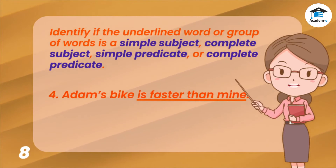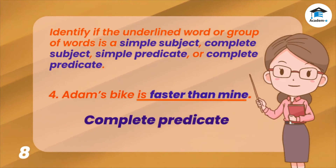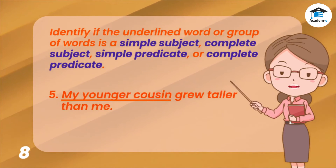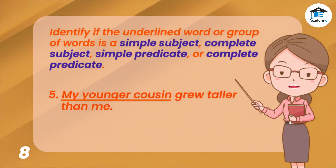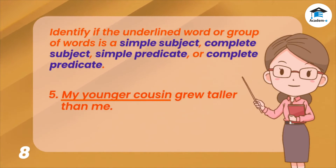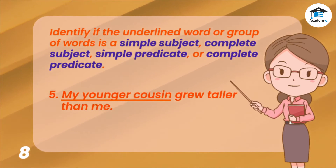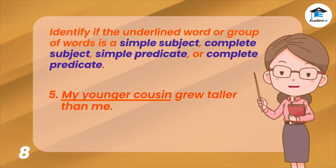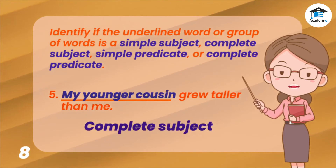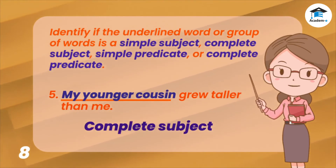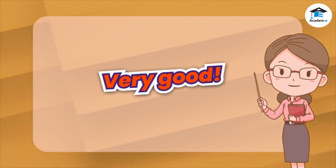Four: 'Adam's bike is faster than mine.' The correct answer is complete predicate. Five: 'My younger cousin grew taller than me.' The correct answer is complete subject. Very good!